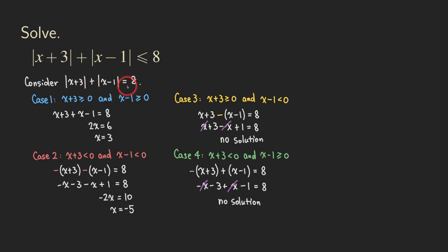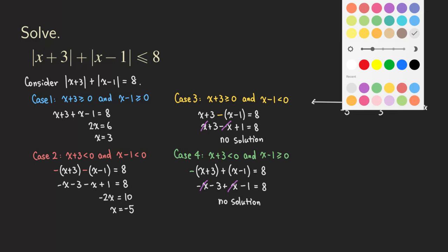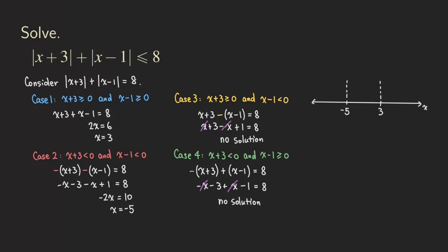So those are the two solutions we have: x equals 3 and x equals negative 5. Now we go back and solve the inequality using the testing points method. First, draw a number line and plot negative 5 and 3 on it. Now let's pick some values to plug in. Let's pick 0: you get absolute value of 3 plus absolute value of negative 1. Is that less than or equal to 8? Yes, so that works.